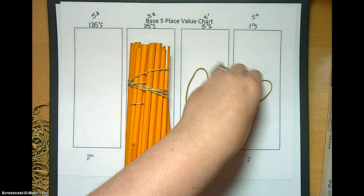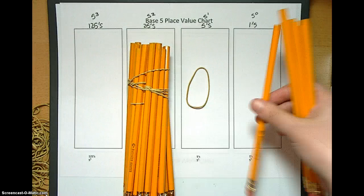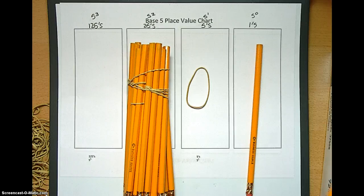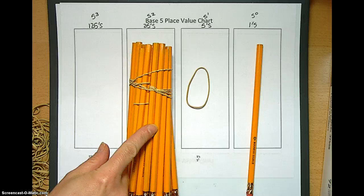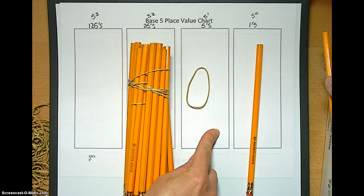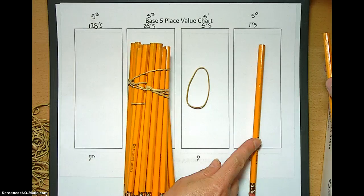If we have one more, the equivalent of base 10, 26. We have 1, 25, no 5s, and 1 single. So that's a 1, 0, 1.